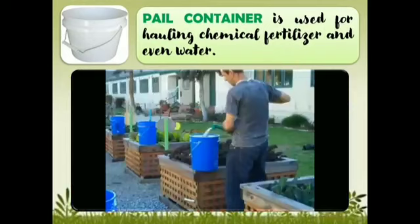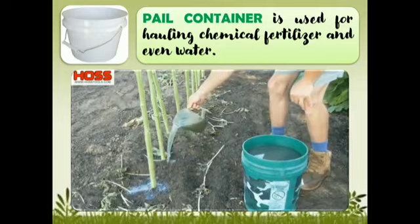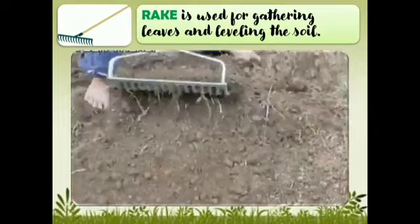Pail container. It is used for holding chemical fertilizers and even water. Rake. It is used for gathering leaves and leveling the soil.